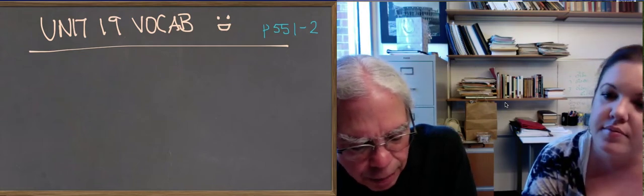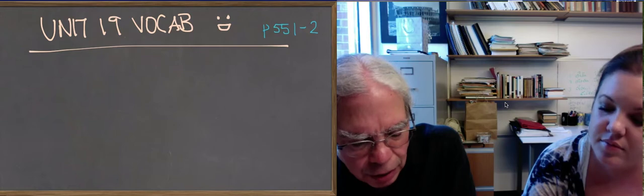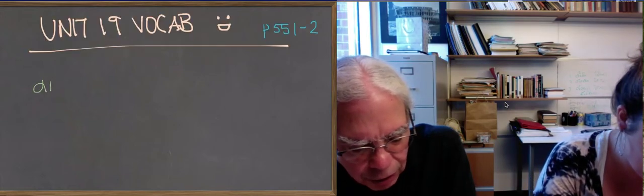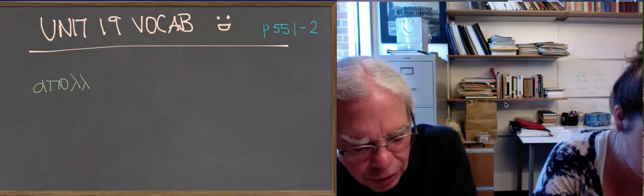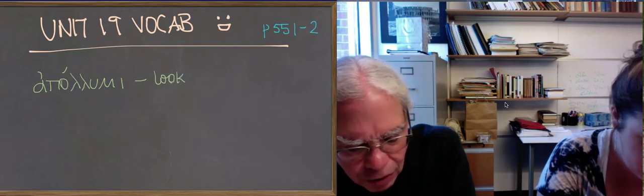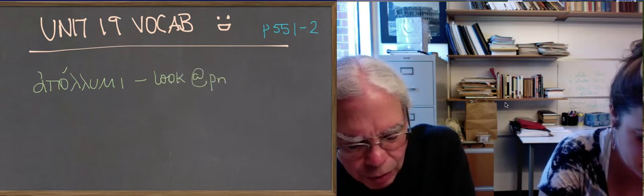The first aorist, apolesa, takes a direct object. And another apolame, that's a second aorist and middle. And that is intransitive. And there are two perfects, apololeka, which is transitive, and apolola, which is intransitive. So what does this word mean?